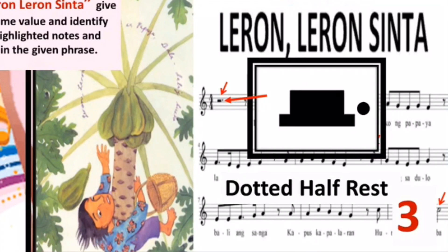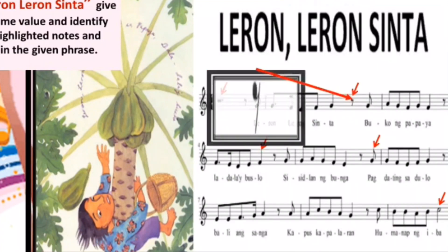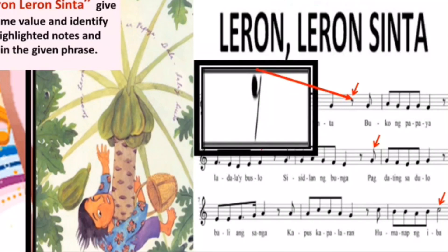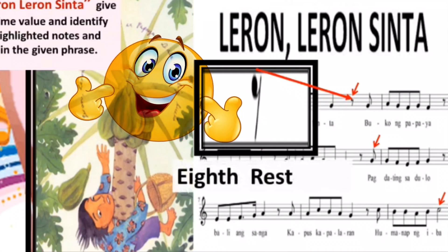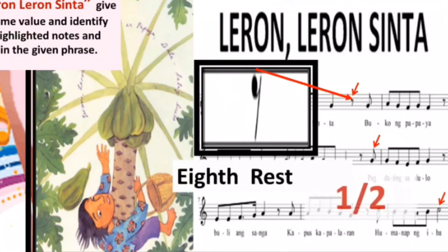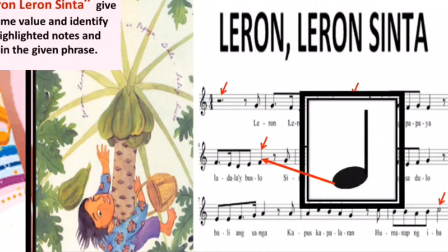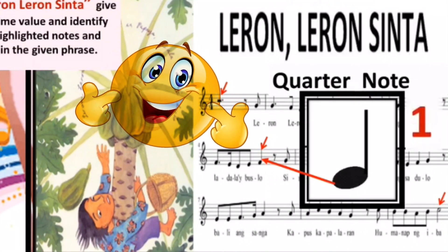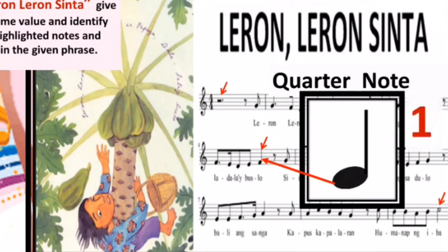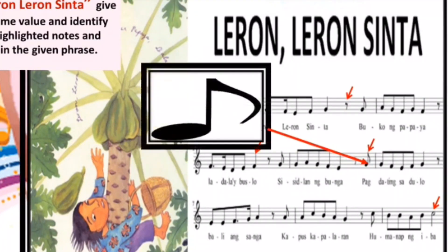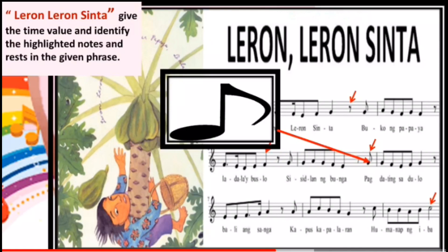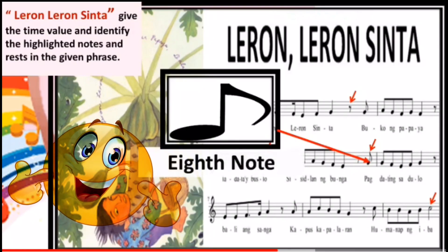Next, what musical symbol is this? Correct, it's an eighth rest and it receives half of a beat of silence. What musical symbol is this? Very good! It's a quarter note and it receives 1 beat of sound. What musical symbol is this? Awesome! It's an eighth note and it gets half of a beat.